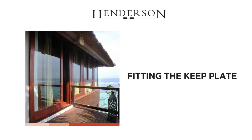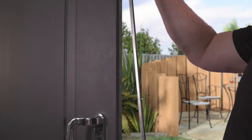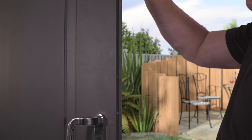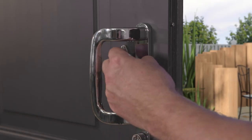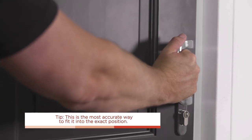Fitting the keep plate. Attach the keep plate to the lock on the side of the door using the locking mechanism to keep it in place. This provides you with the exact position of where it needs to be fitted onto the jamb.